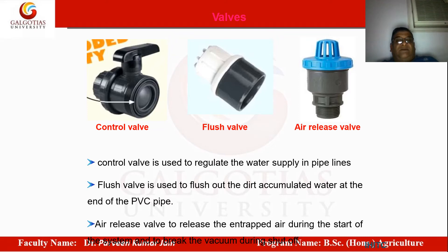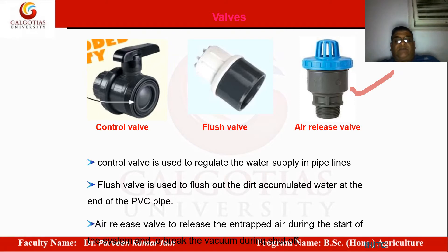There are different types of valves utilized at different places with their own functions. The air release valve functions to release accumulated air pressure inside the pipes, which can interrupt water flow. Whenever there is a change in elevation or height, an air release valve is installed to release air clogged in the pipe system.